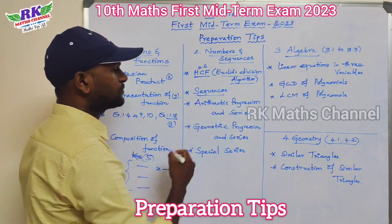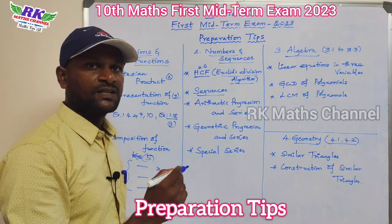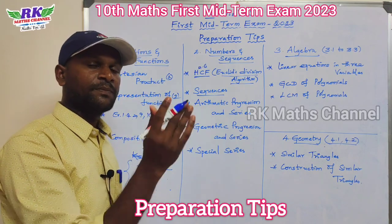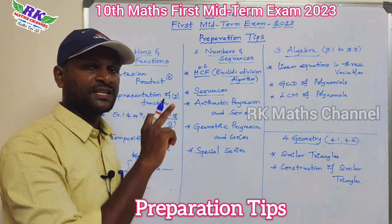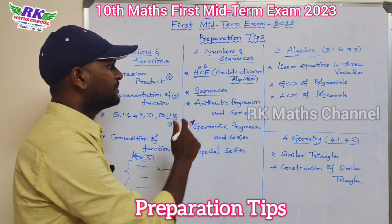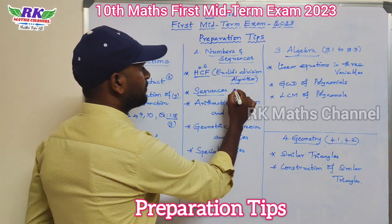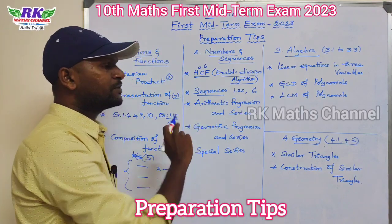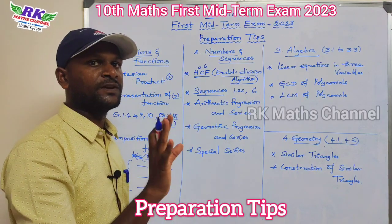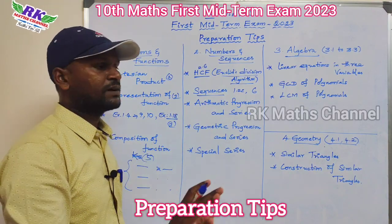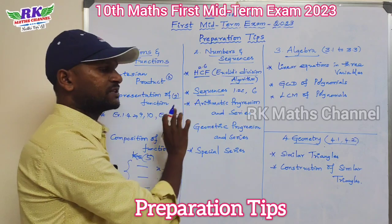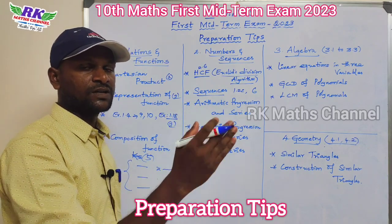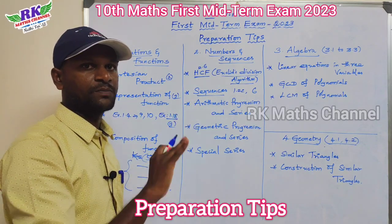For Sequences, exercise 2.4 has 4 exercises. Problem 6 — let's start with three examples: example 1.22. So example 1.22 and exercise problem number 6 are sometimes 5-mark questions. That's important.